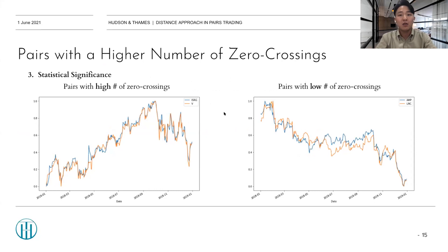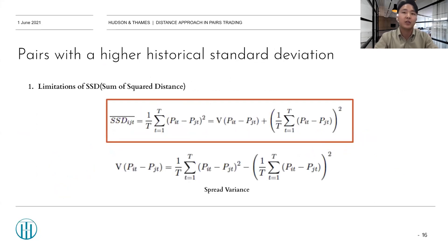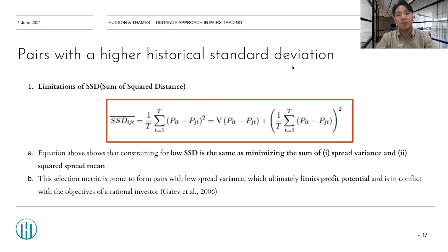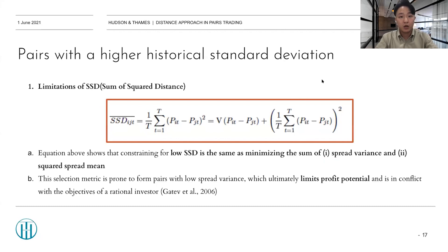Now let's move on to the fourth method: pairs with a higher historical standard deviation. If we look at the equation for calculating the sum of squared distance of two stocks, it can be divided into two parts as shown on the slide. Therefore, if we constrain for low SSD, it is the same as minimizing the sum of spread variance and squared spread mean. With a similar logic to the number of zero crossings, the variance of a pair has a significant effect on the pair's return — if two stocks move exactly the same way, there will not be any chance of arbitrage. By adding an additional criteria of variance to the pair selection, we can minimize the limitations of SSD pairs. So I introduced four different methods for pair selection: basic, industry, number of zero crossings, and the variance/standard deviation.